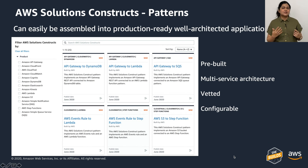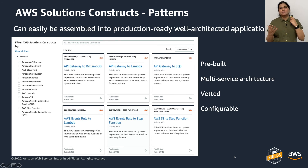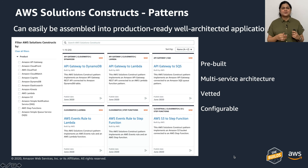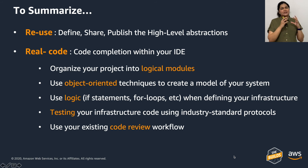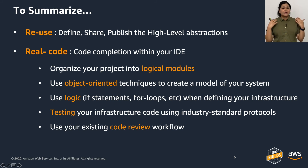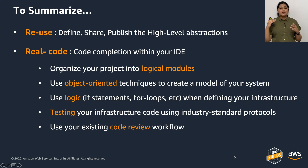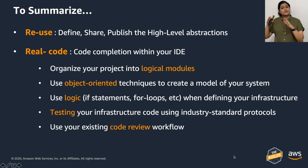The third type is solution constructs — pre-built, well-architected patterns vetted by solutions architects at Amazon. For example, API Gateway plus Lambda is a commonly used pattern you can quickly pick up from solution constructs and configure as you wish. Because constructs are just code, you can share them across your organization or the broader community, making infrastructure highly reusable. You can apply the same testing standards and code review workflows you use for application development to your infrastructure.